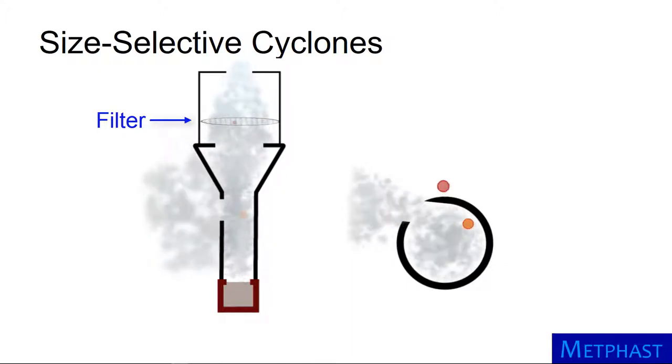Many of the medium sized orange particles also pass to the filter, but some of them hit the walls and are forced into the grit pot.